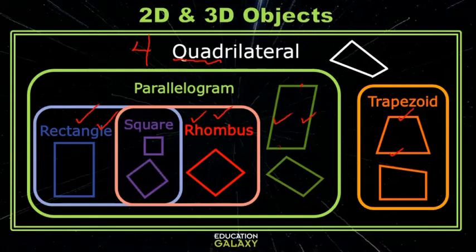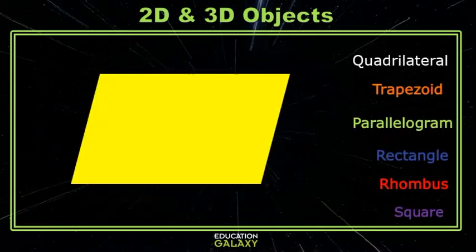Now remember, a square can also be called a rhombus, a rectangle, a parallelogram, and a quadrilateral. It belongs to all of these groups. Let's see how many names can apply to each of these polygons.